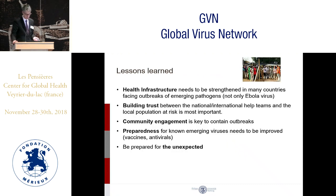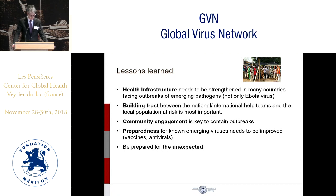There were several lessons learned during this outbreak. It is mainly about health infrastructure, which needs to be strengthened in many countries facing outbreaks of emerging pathogens, not only Ebola virus. Building trust between national and international helpers and the local population at risk is also very important. Without community engagement, an outbreak will never stop — community engagement is key. We also need to improve preparedness for known emerging viruses like Ebola, but also be prepared for the unexpected — the Disease X.